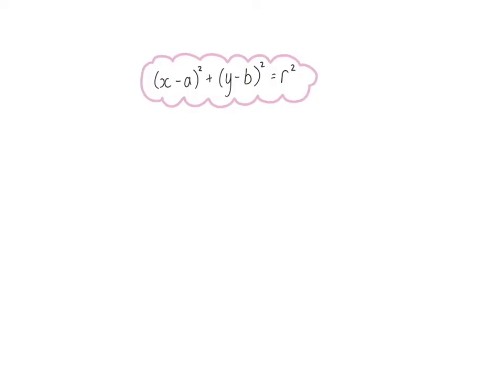In the second lesson on analytical geometry, we saw that the standard form for the equation of a circle is x minus a squared plus y minus b squared equal to r squared. We can, however, also multiply out those brackets and give you the equation in this form.